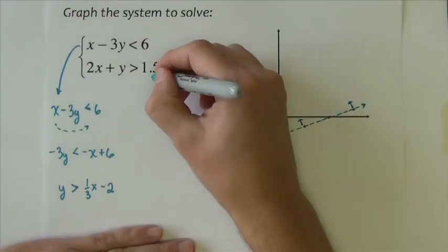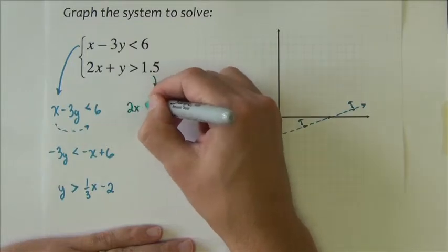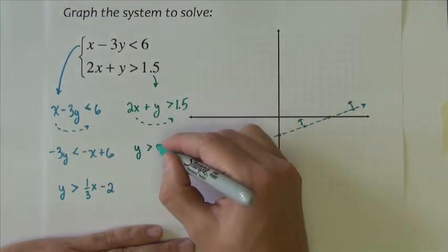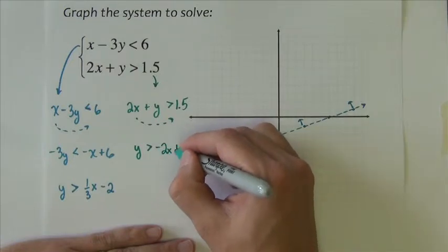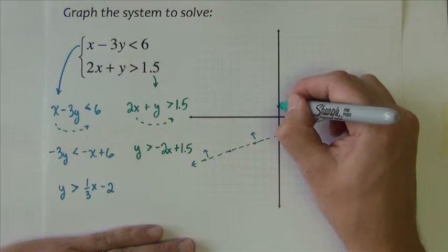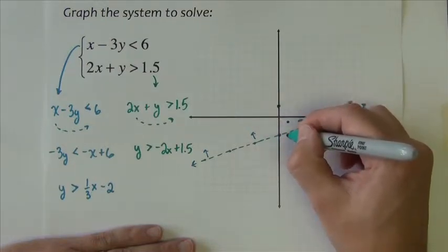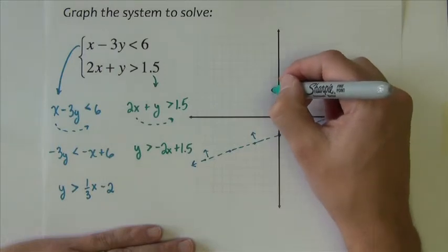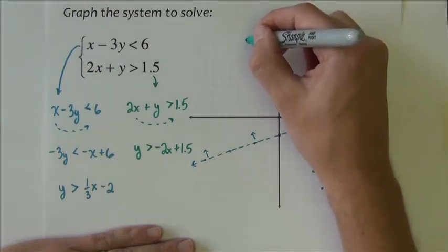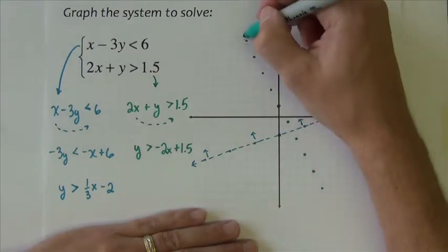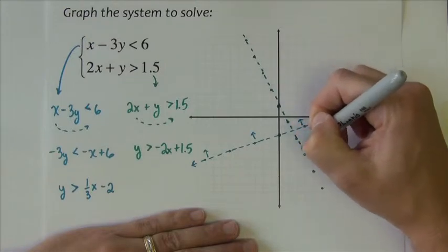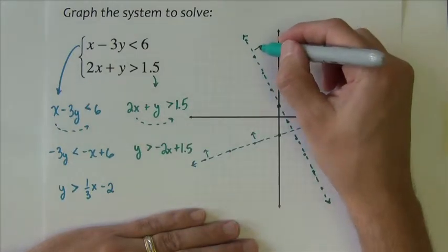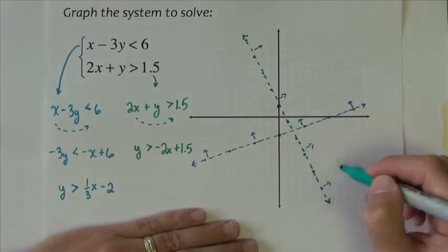Okay, the next one. Solving this for y is a little bit easier. 2x plus y is greater than 1.5. I'm just going to subtract 2x. y is greater than negative 2x plus 1.5. So it starts at 1 and a half. Negative 2, down 2, right 1, and it continues that pattern. I can also go up and to the left. It is also going to be a dotted line. And I want greater than, greater than shades up above this line, like that.